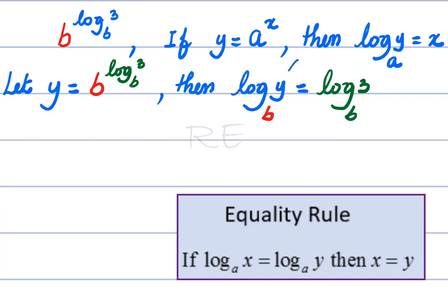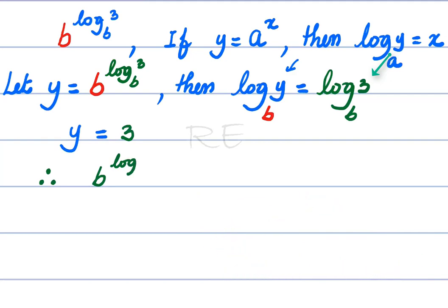Now, the equality rule says that if log B of Y is equal to log B of 3, Y must be equal to 3. These two numbers are the same. In conclusion, B to the log B of 3 power is equal to 3.